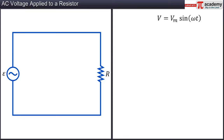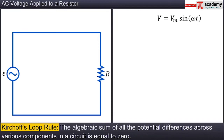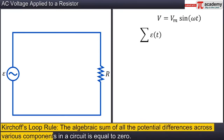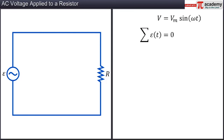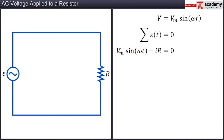We can calculate the current passing through the resistor using Kirchhoff's loop rule: the algebraic sum of all the potential differences across various components in the circuit is equal to zero, with proper signs used for potential differences around the loop. Applying Kirchhoff's loop rule to the given circuit, we get Vm sin(ωt) − iR = 0, where Vm is the maximum potential difference offered by the AC source. The term iR is due to the fact that if a current of magnitude i passes through a resistor of resistance R, the potential fall across it is denoted by iR.